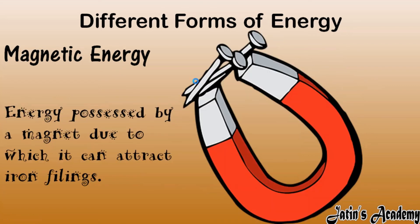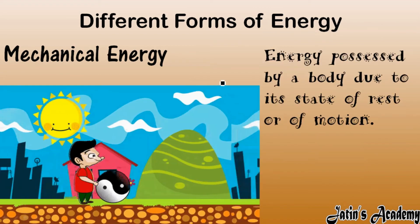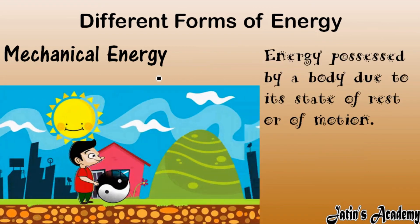Next we have magnetic energy. Magnetic energy is the energy possessed by a magnet due to which it can attract iron filings. Through this energy, the magnet can attract iron pieces — that is magnetic energy.